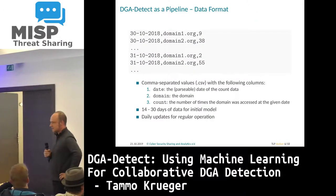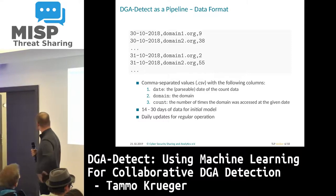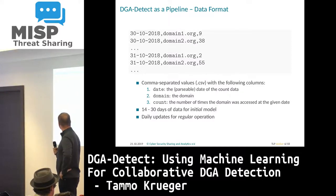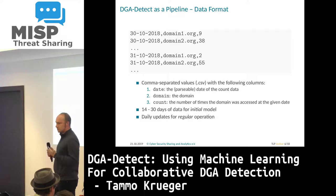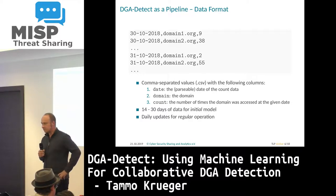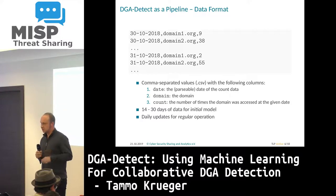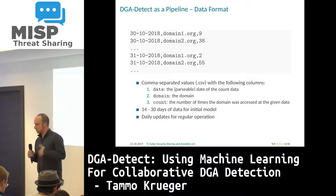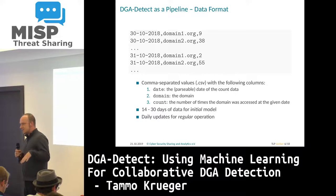How is the data format that you have to use for uploading? It's very simple — in the end it's just a CSV file that you have to upload. It's like the date when you observed the domain and how often you observed it, and this is the only kind of data the algorithm needs. When we learn an initial model, we need a bit more data — I would say 14 to 30 days — to get a better view on what is happening at a specific company, so we have all the domains they are visiting. Then when we've built this initial model, the daily updates are used both for filtering and for updating our model.